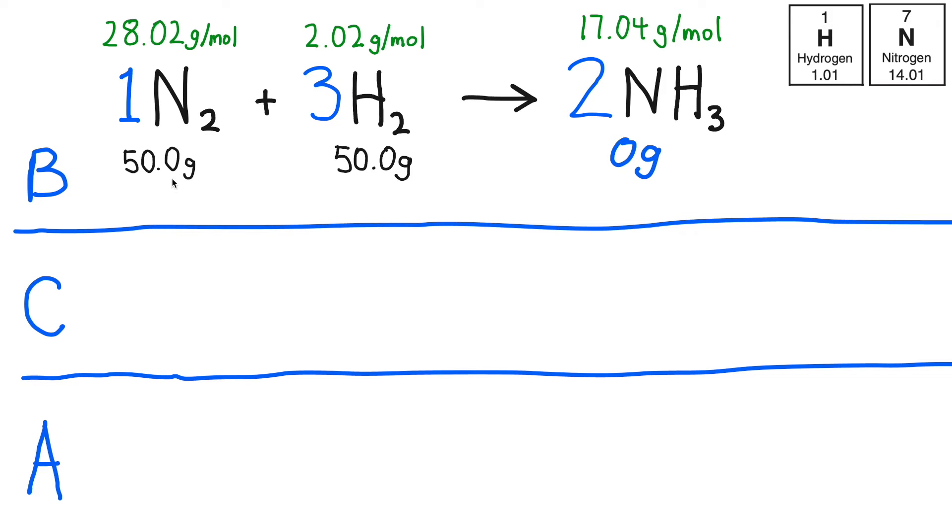I'm going to do a little side calculation to calculate how many moles of N2 I would have in 50 grams. Using a conversion factor, it's going to look like this. I would do a similar calculation to figure out how many moles of H2 are present in 50 grams. I'm going to keep some extra significant digits. And of course zero grams of NH3 is also zero moles of NH3. Let me clean things up again.